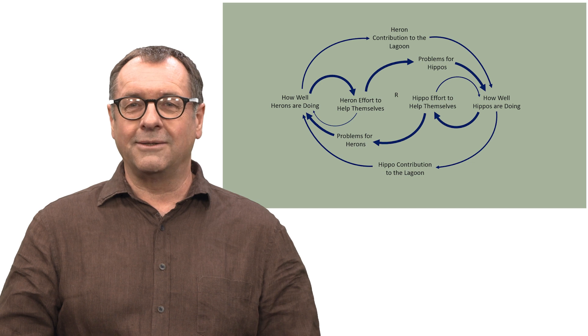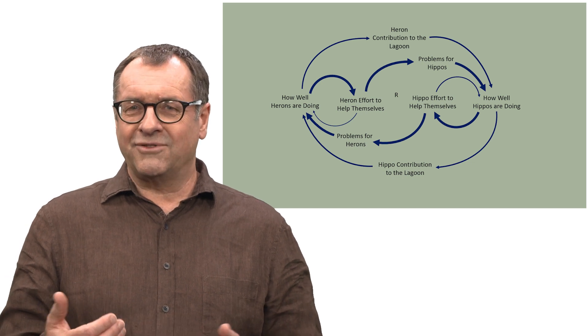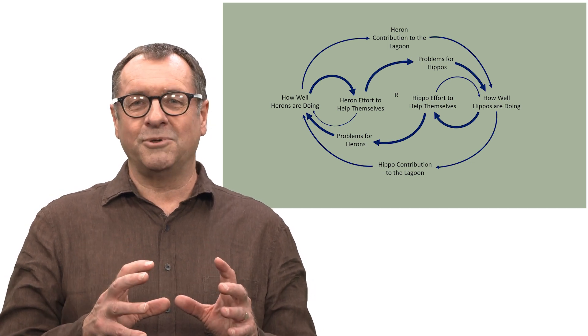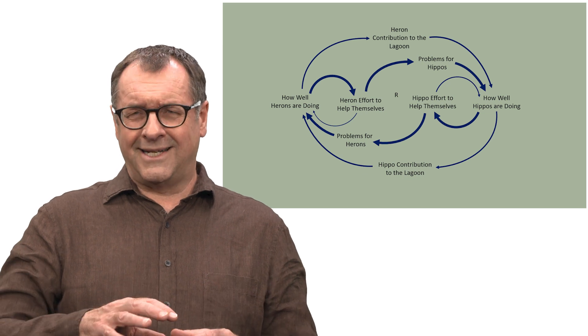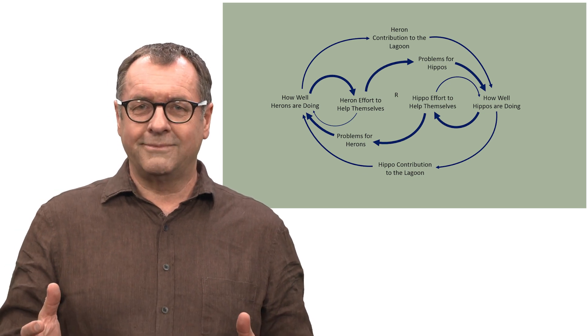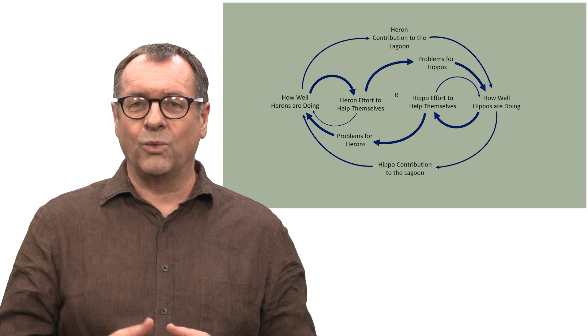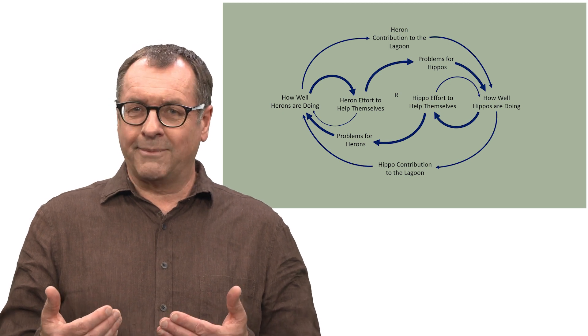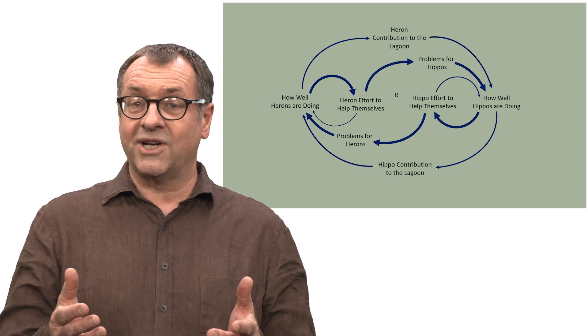There are problems in the lagoon because the reinforcing process in the centre of the diagram, the one which involves growing problems for everybody, it has more energy to it than the outside reinforcing process. Once Billy Bonk and Frankel understand this, well then they have the challenge of convincing both herons and hippos to work together. They need to strengthen that outside loop. And that means getting them to start working together, and more fundamentally, to start appreciating each other's contribution.